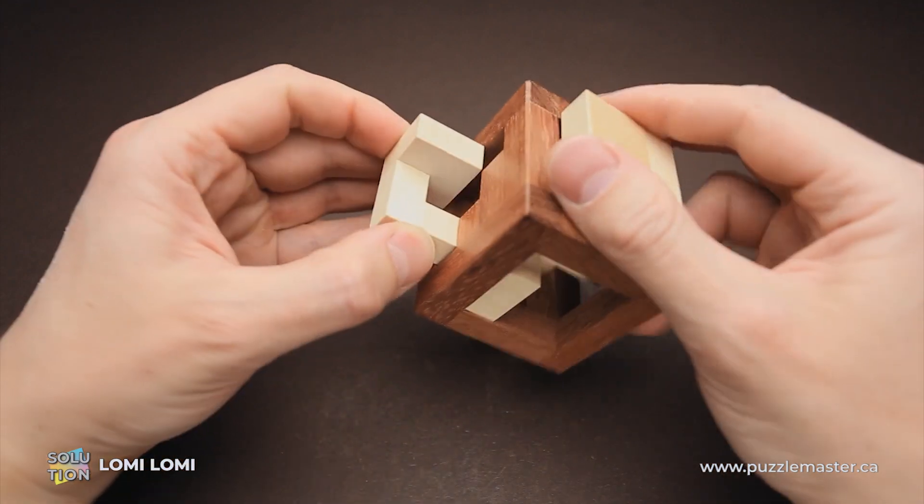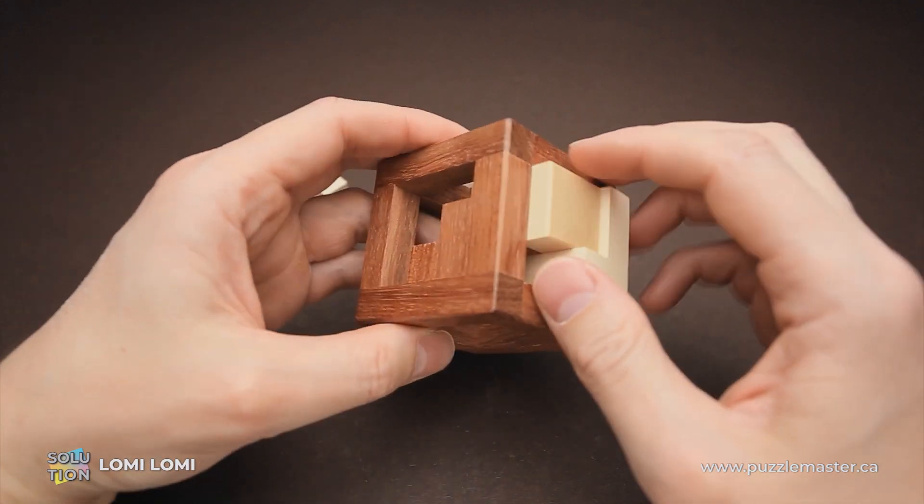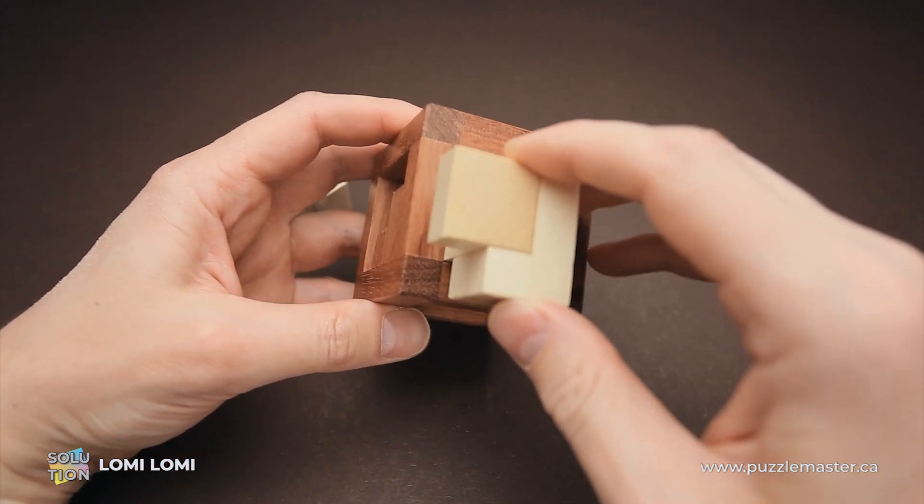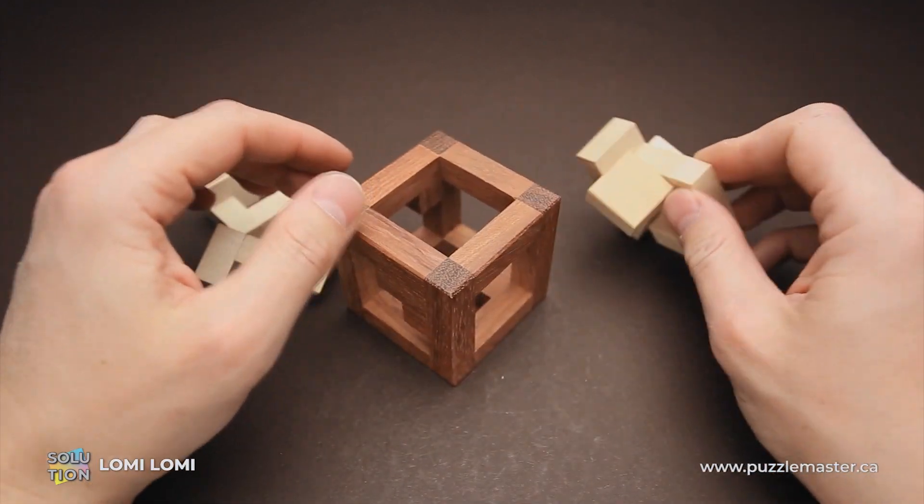Then move this piece all the way to the corner. Now you can easily grab this piece and remove it. Then you can grab these two parts, move them to the left, up to the front and remove. And then you can remove the last piece, and the puzzle is disassembled.